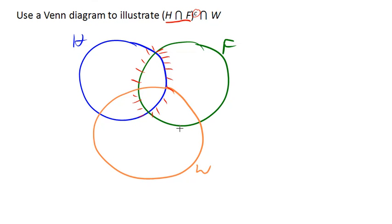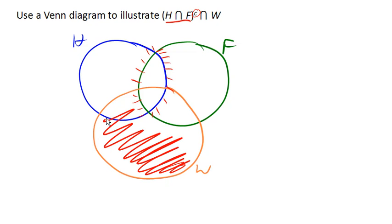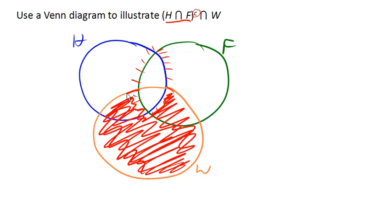Now we need the intersection between that and W. So we need everything in W here that's not in that little football-shaped region. So that's going to be everything down here is fine. Everything over here is fine. Everything over here is fine. The part that we don't want is this part here. So all together, we're going to have... Oh, sorry. We're going to have that whole region there as that set.